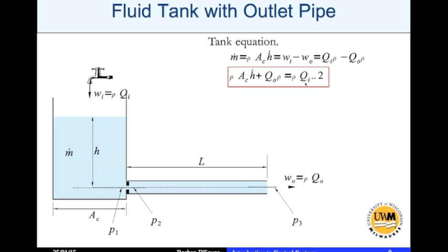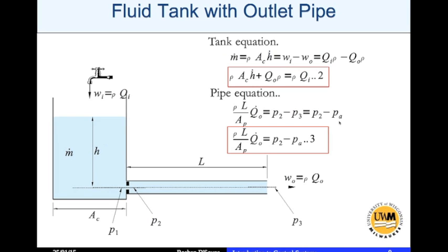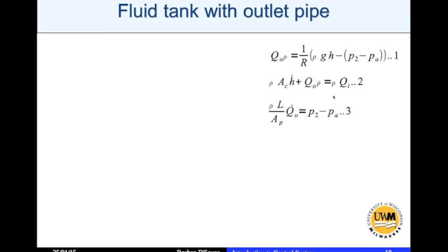Then we write the pipe equation. We know that ρL/A_p times Q̇_0 equals p₂ minus p₃. p₂ is the pressure here, p₃ is the pressure here. Now p₃ is nothing but atmospheric pressure, so we can substitute for p₃ in terms of p_a. Therefore, we have equation number three. Now we put all these equations together.